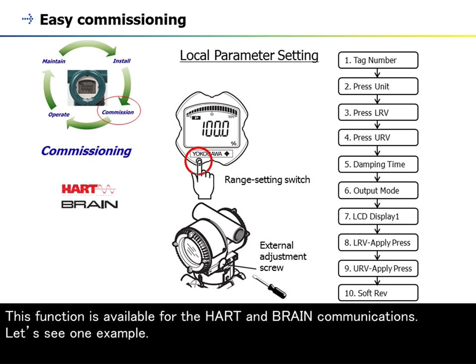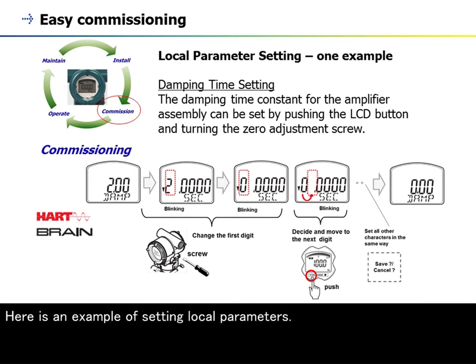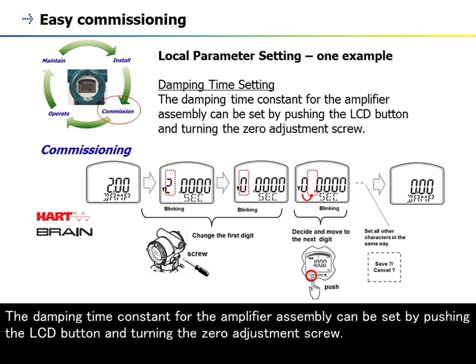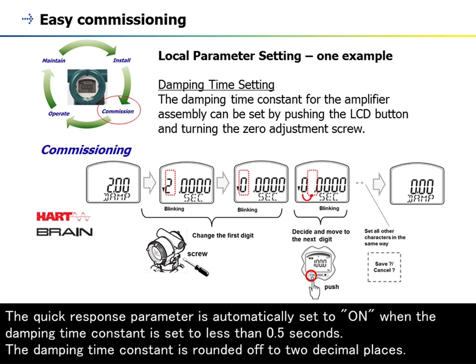Here is an example of setting local parameters. The damping time constant for the amplifier assembly can be set by pushing the LCD button and turning the zero adjustment screw. The quick response parameter is automatically set to on when the damping time constant is set to less than 0.5 seconds. The damping time constant is rounded off to two decimal places.